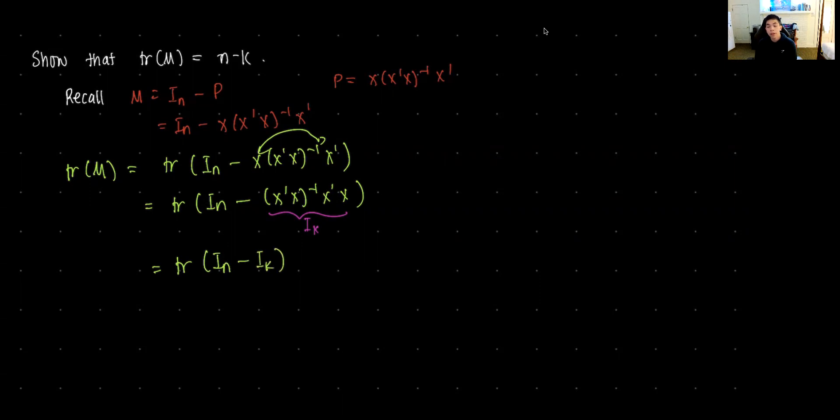Now, we know that if we're dealing with the identity matrix, the rank of the identity matrix is equal to the trace of the identity matrix, which is, in this case, the number of rows the matrix would have.